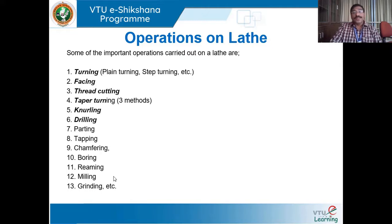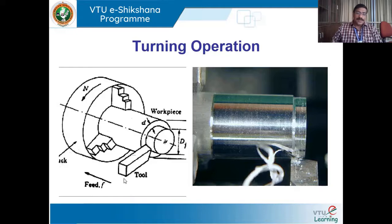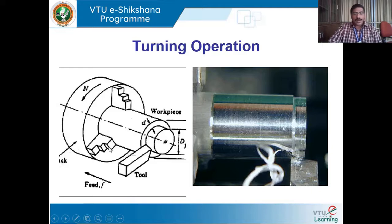The first and most fundamental operation is the turning operation, specifically plane turning. The workpiece is held in a chuck — either a three-jaw universal chuck or a four-jaw independent chuck. Using a chuck key inserted into the keyhole and rotated, the three jaws converge or diverge simultaneously to hold the workpiece. The axis of the lathe is coincident with the axis of the workpiece — they are coaxial.